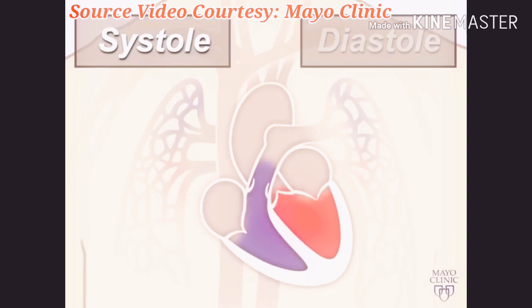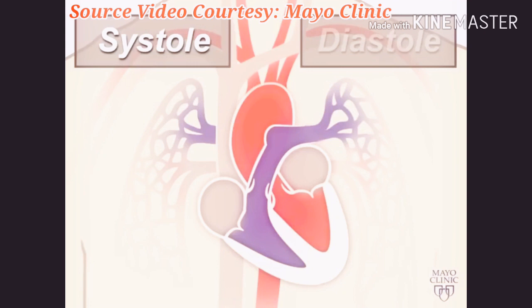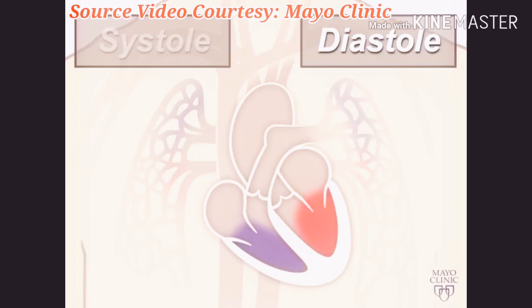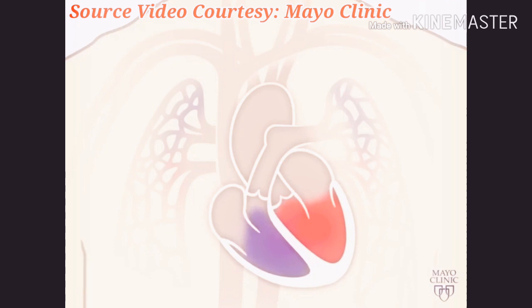During systole, your ventricles contract, forcing blood into the vessels going to your lungs and body — much like ketchup being forced out of a squeeze bottle. The right ventricle contracts a little before the left ventricle. Your ventricles then relax during diastole and are filled with blood coming from the upper chambers, the left and right atria. Then the cycle starts over again.